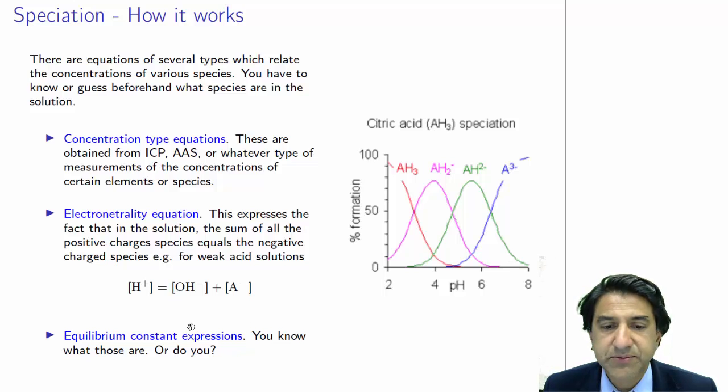Well, we know what equilibrium constants are. They are constants which involve activities or concentrations of species, depending on whether you're using high or low concentration. So we know what those kinds of equations look like.